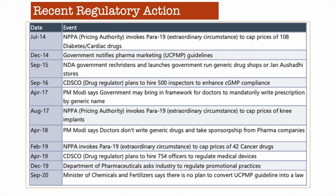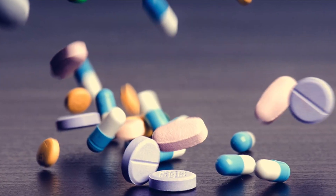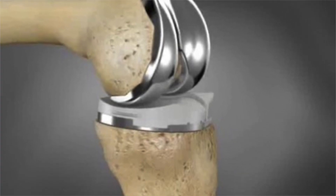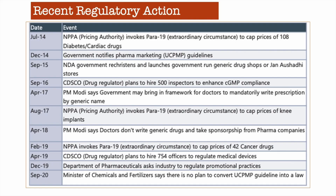NPPA does have a special right under clause 12.19 — extraordinary circumstances — in which they can cap some drug prices. They controlled 108 diabetic and cardiac drugs in July 2014. Then they had a similar action in the case of knee implants. There were also 42 cancer drugs controlled by NPPA in FY19. CDSCO works with inspectors to control GMP practices — for example, 754 inspectors and officers have been hired — which means going forward, they are going to tighten their grip over contract manufacturers and pharmaceutical manufacturers in India.